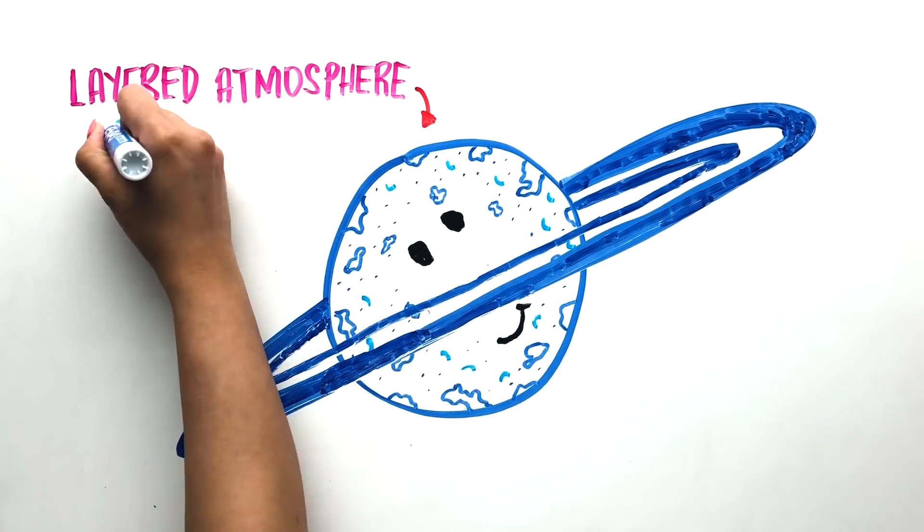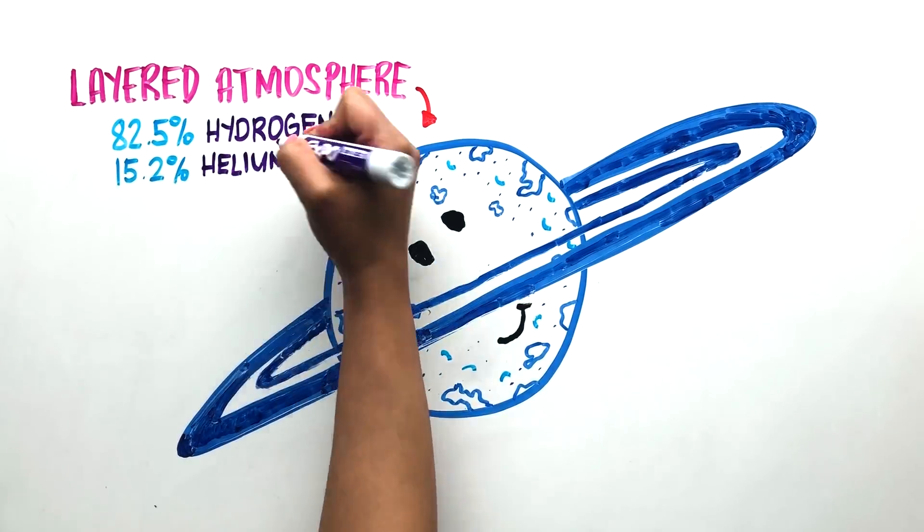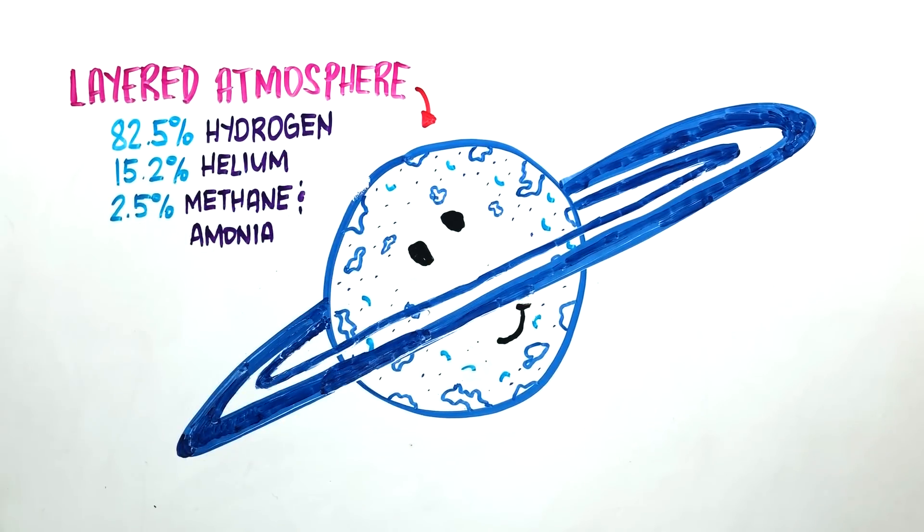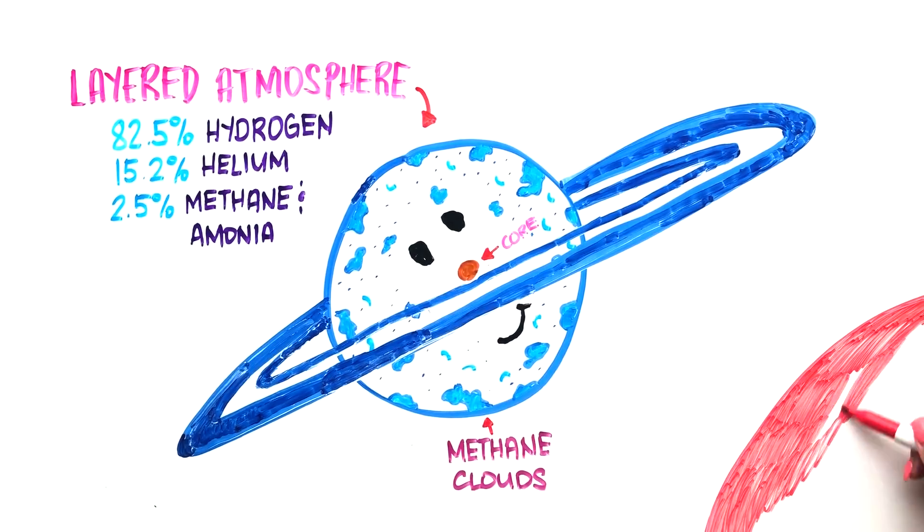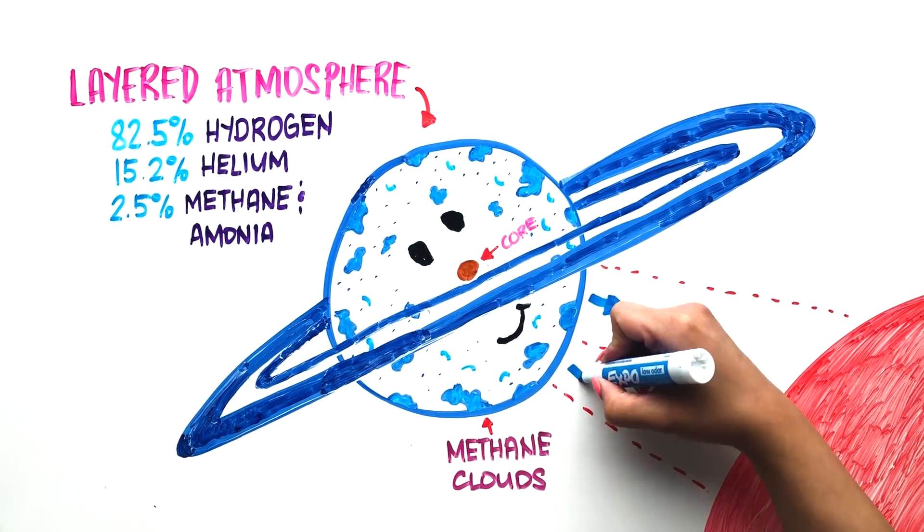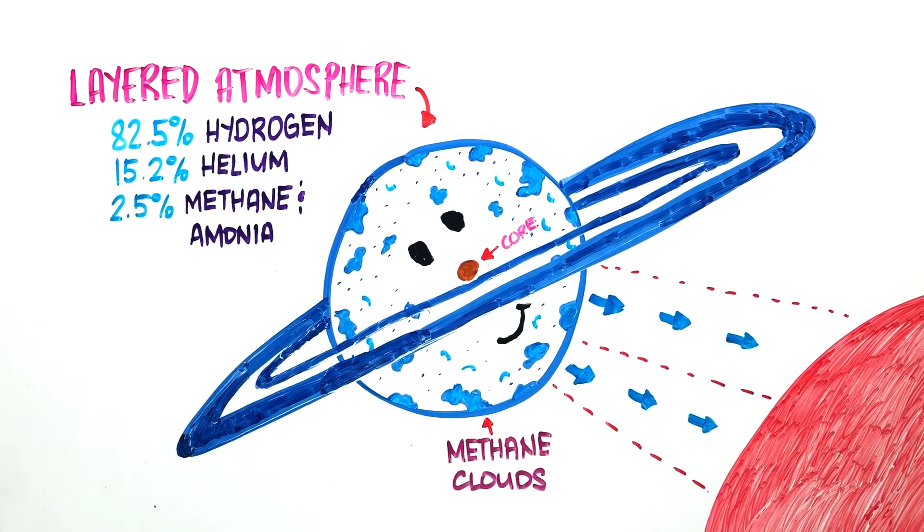Its atmosphere is made up of hydrogen, helium, methane, and ammonia ice that hides storms underneath and surrounds a small core made up of rock and possibly ice. The methane ice clouds absorb the red light from the Sun and reflect the blue light back into space, making the planet appear blue.